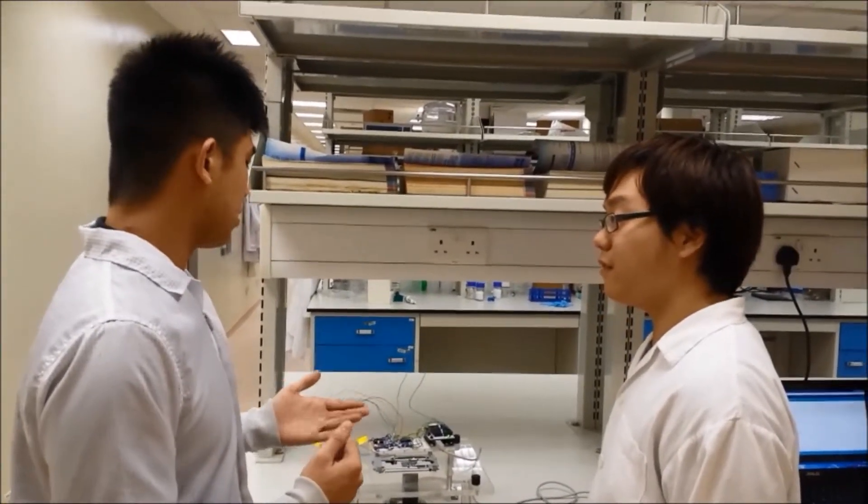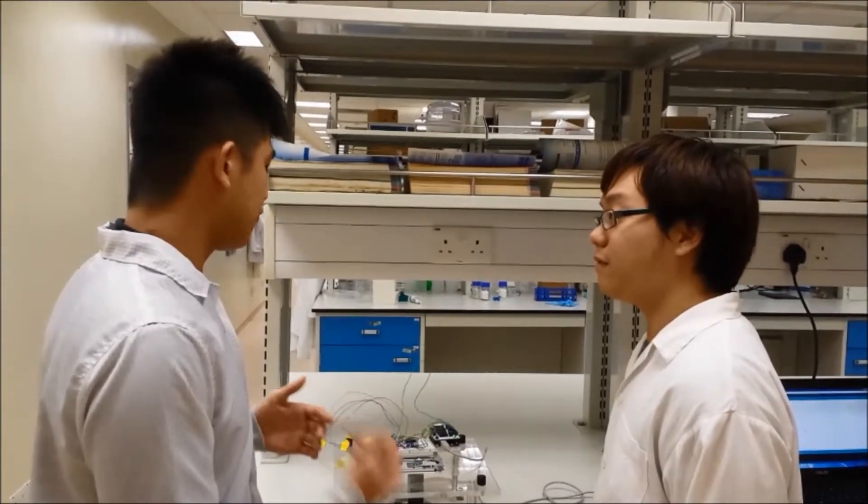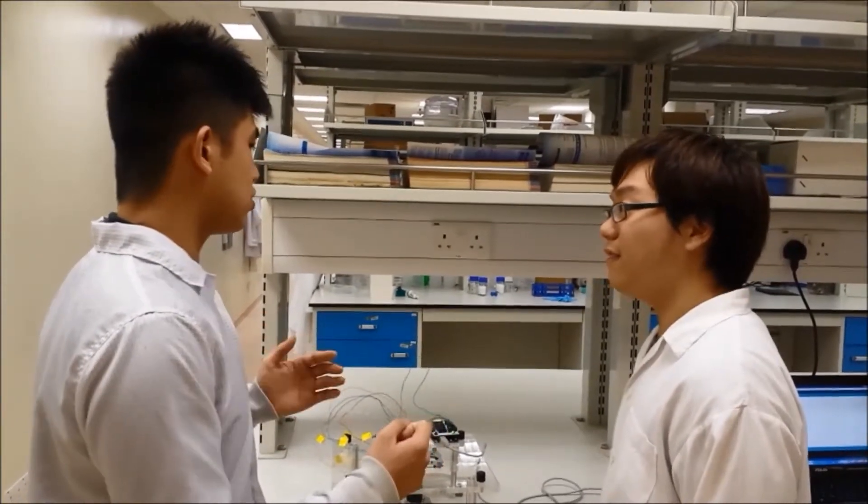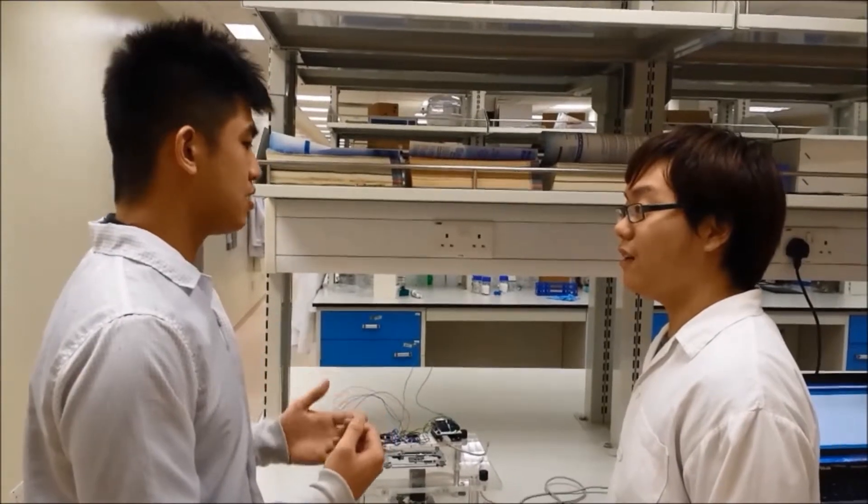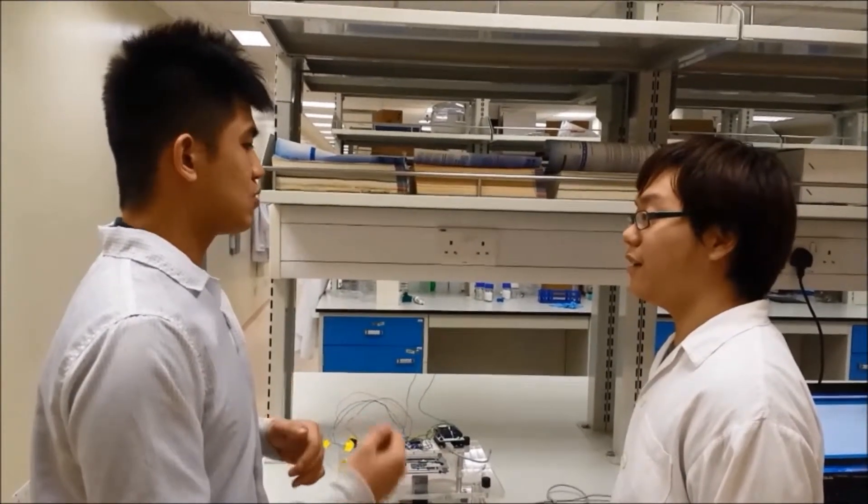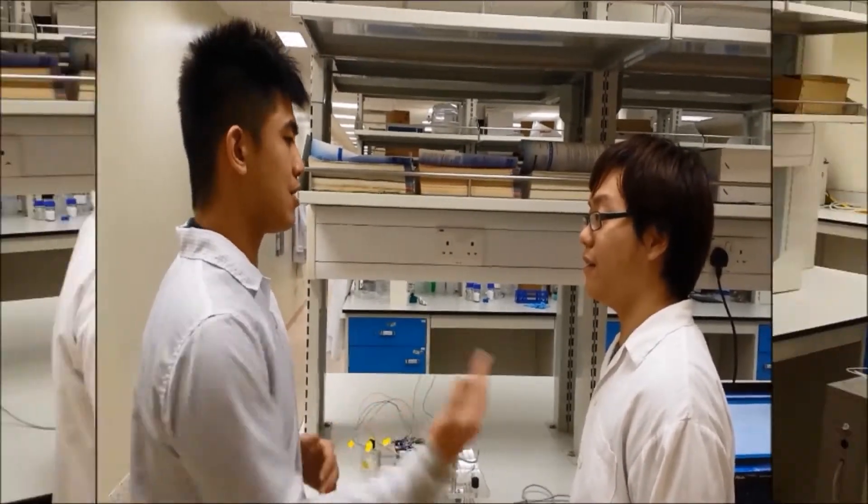Basically, the ink shield controls the printing mechanism within the ink cartridge, while the Arduino receives codes from the computer to facilitate the printing process, which will be further elaborated by my colleague.